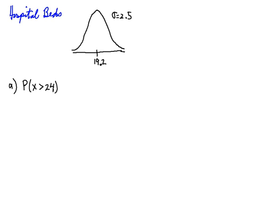Let's place 24 in the distribution. I want the probability that X is greater than 24, which is the area under the distribution above that value. To get that, I need to find the Z-score of 24. So how many standard deviations is 24 from 19.2? Dividing by 2.5, I get 1.92 — it is almost two standard deviations to the right of the center of this distribution.